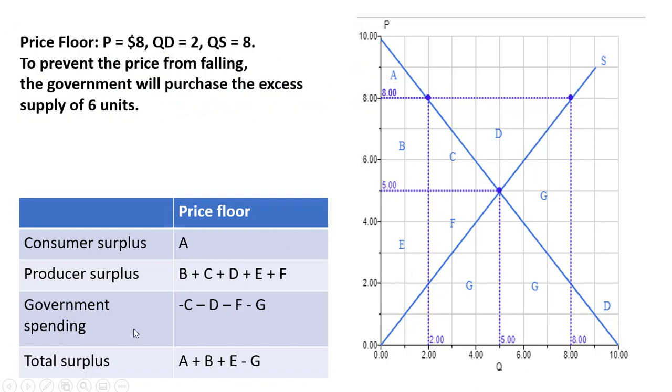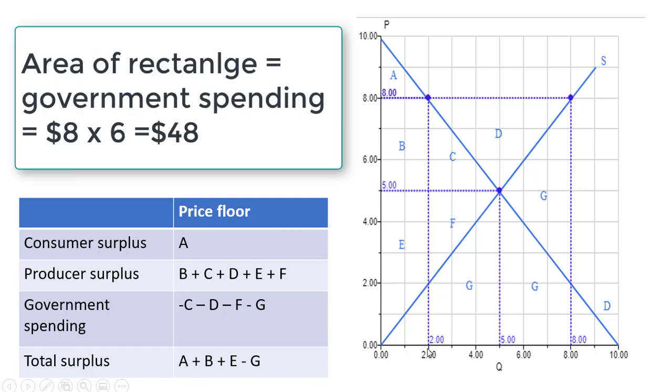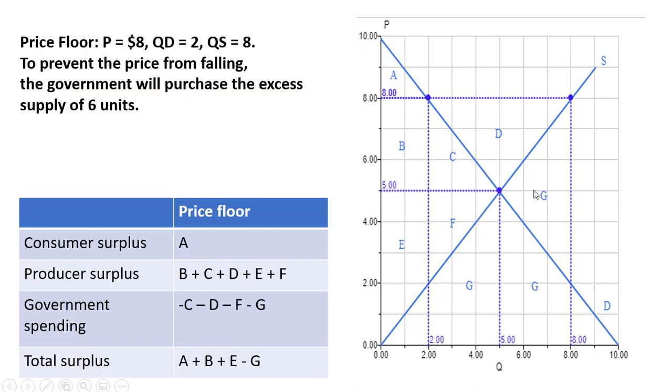Government spending. As I mentioned, the government is buying six units. Eight minus two, they're buying six units. So we have this giant rectangle here representing government spending. So C, D, F, and G.